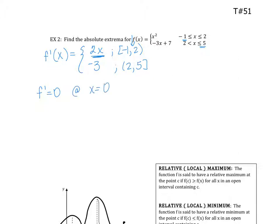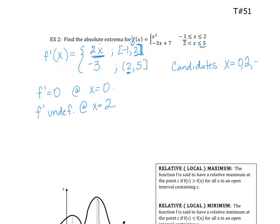So I could possibly have an extreme there. Is the derivative undefined? I would have an issue at x = 2. Because look at the derivative: the derivative from the left would be 4, the derivative from the right would be negative 3. So the derivative is undefined at x = 2. There are my candidates — I always like to write them because AP often gives a point for identifying candidates. I have two critical points: zero and two, and my endpoints.